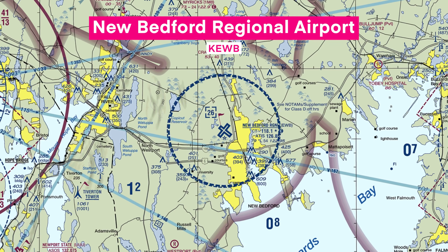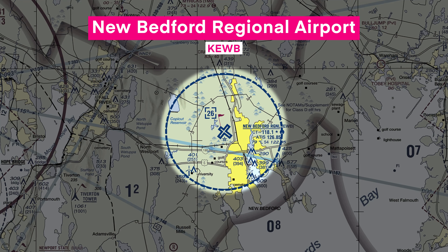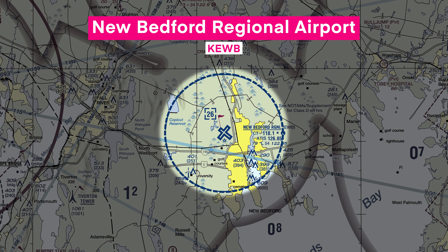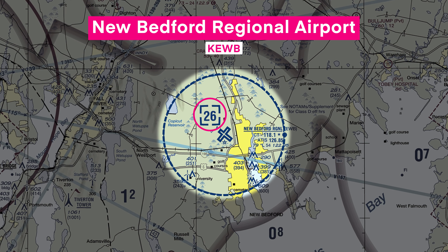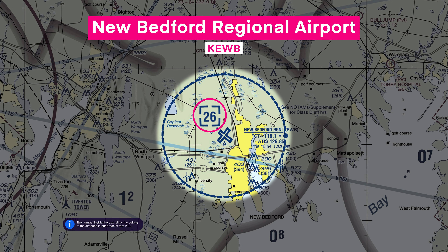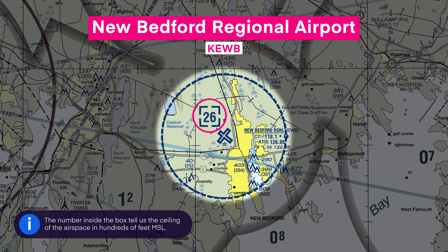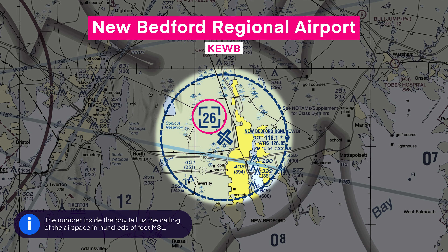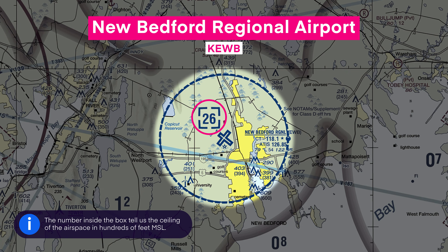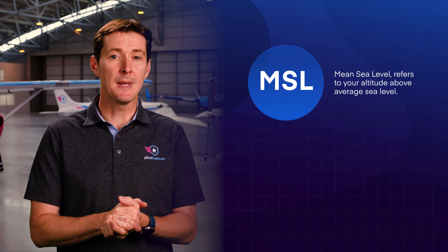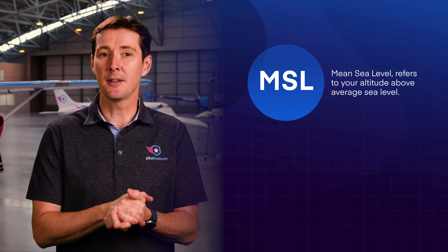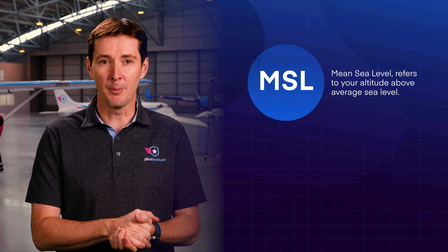Let's see what a Class D airport looks like on a chart. Here's New Bedford Regional Airport in Massachusetts. You can see the boundary as a dashed blue circle. Inside the circle is also a box with a number. This tells us the top, or the ceiling, of the airspace in hundreds of feet MSL — mean sea level, meaning our altitude above sea level.